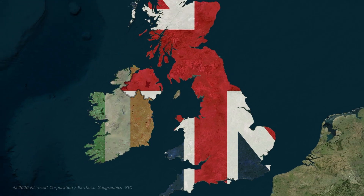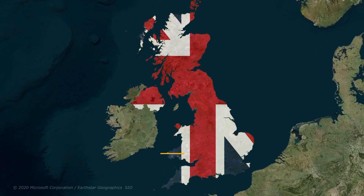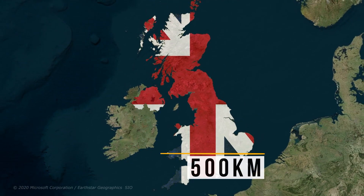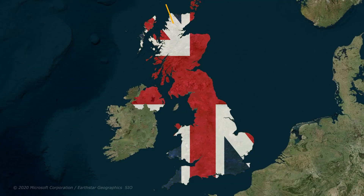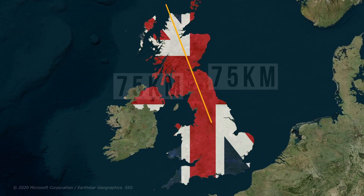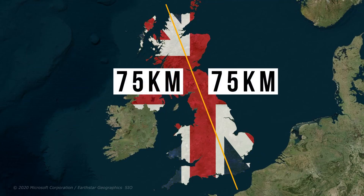At its widest, the United Kingdom is 500 km wide, and its length from the northern tip of Scotland to the southern coast of England is about 1,000 km. No part of the United Kingdom is more than 75 km from the sea.